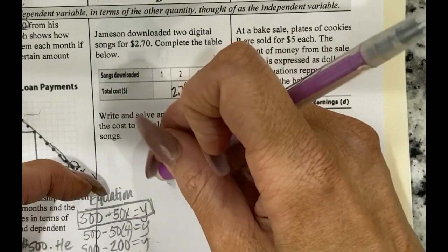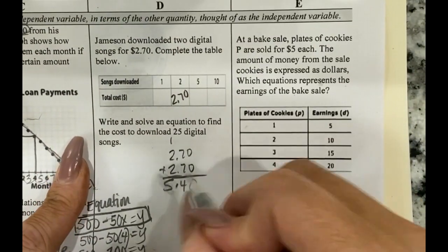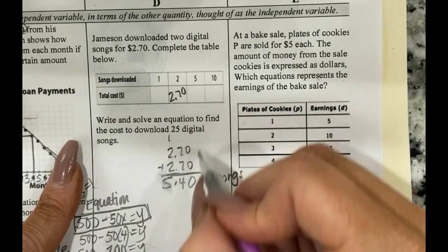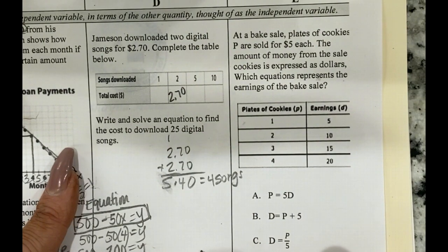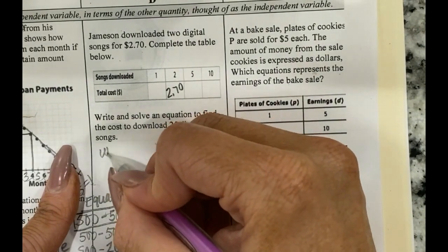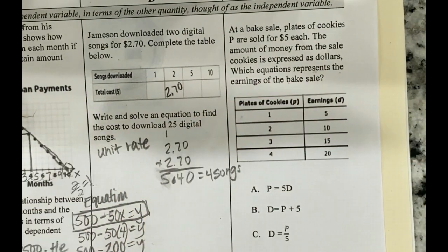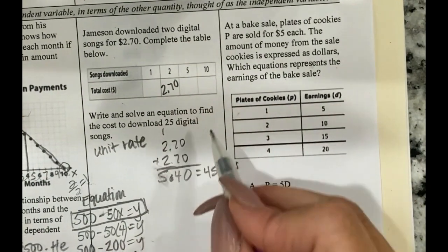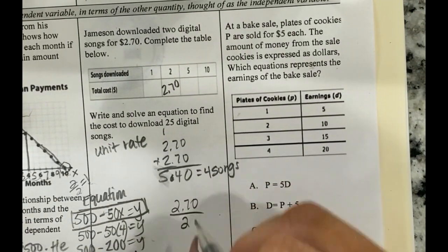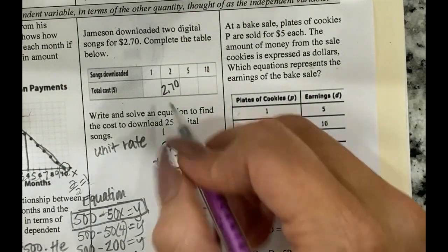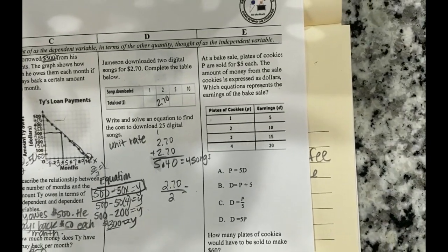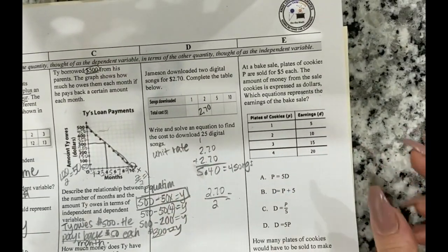540 would equal four songs, but four isn't an option up here. And so I think the best thing to do would be to find the unit rate. So remember that how you find the unit rate is you're going to divide. Okay. So if I divide 270 and I divide it by two, you will get your unit rate and then you will be able to fill in your table and answer the questions. Okay. So I am going to leave you with the rest of this to do on your own.